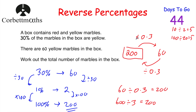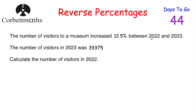I'd probably use the multiplier approach for that question, though you could use either. I tend to use multipliers for calculator questions. Now for our last question — one I want you to try yourself: the number of visitors to a museum increased by 12.5% between 2022 and 2023. The number of visitors in 2023 was 39,375. Work out the number of visitors in 2022. Pause the video to try it.